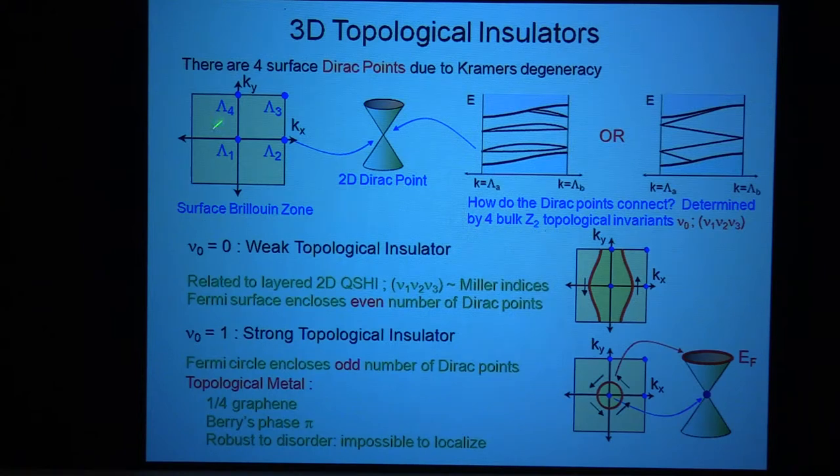There are certain points where k and minus k are the same point. And at those points, surface states, states which are localized at the surface inside the energy gap, if they exist, they have to be Kramers pairs.